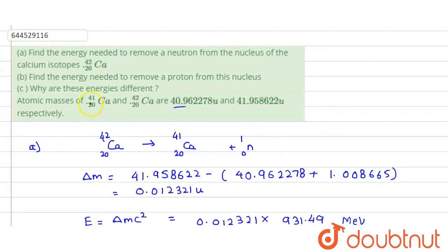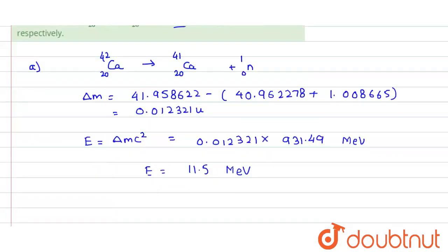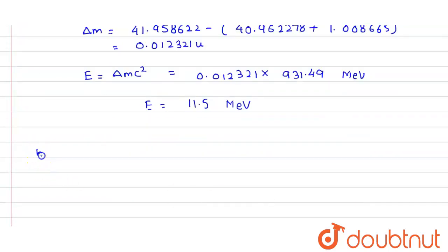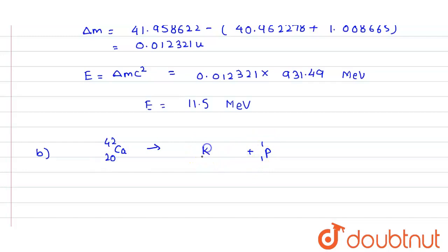In part B, instead of a neutron we are removing a proton from Ca-42. Writing the equation: from calcium-42 (Z=20), we remove one proton. Balancing the equation, 19 plus 1 equals 20, and the mass number becomes 41. The remainder is potassium-41 (Z=19).